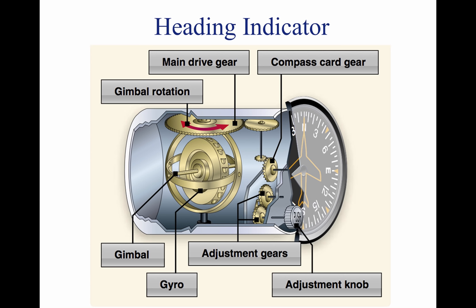The rotor turns in a vertical plane, and fixed to the rotor is a compass card. Since the rotor remains rigid in space, the points on the card hold the same position in space relative to the vertical plane of the gyro. As the instrument case and the aircraft revolve around the vertical axis of the gyro, the card provides clear and accurate heading information.